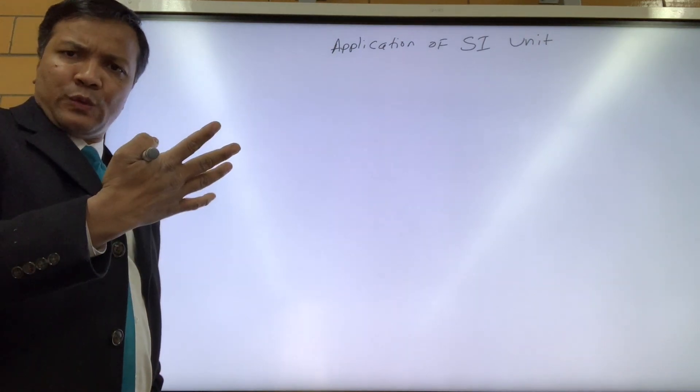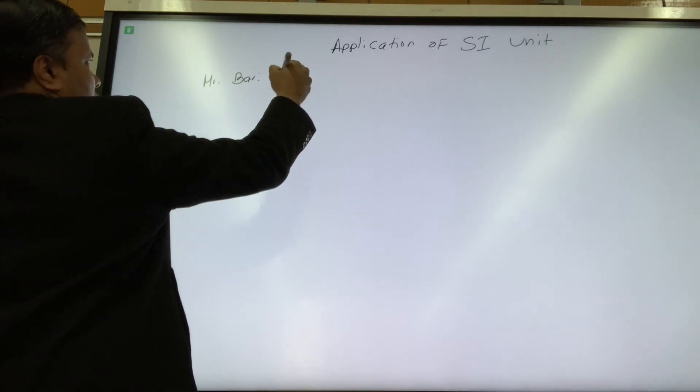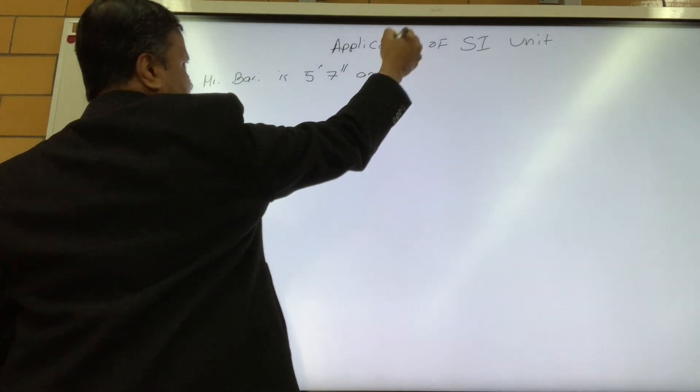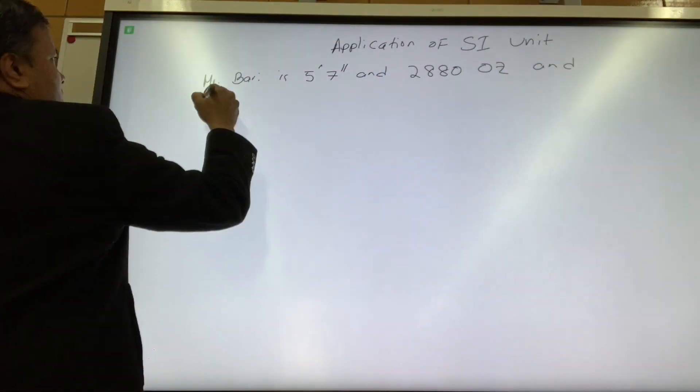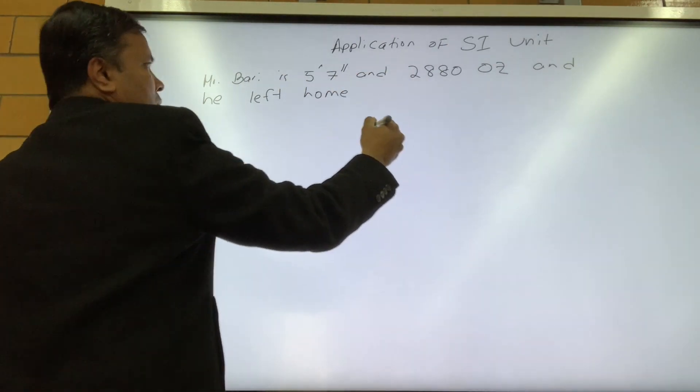I'm going to show you application of SI unit, so let's get started. Mr. Berry is 5 feet 7 inches and 2,880 ounces, and he left home.